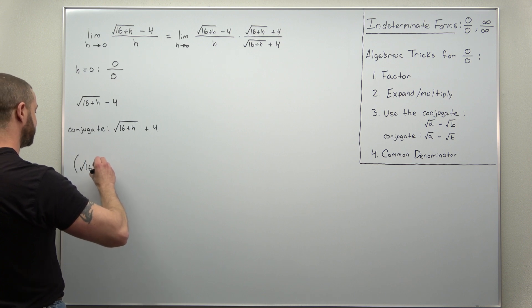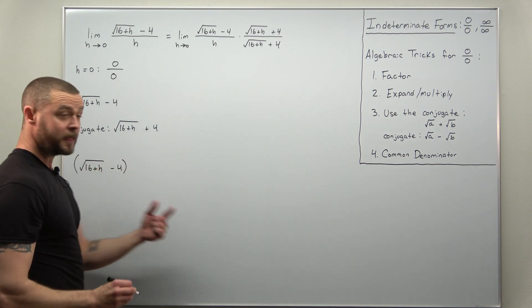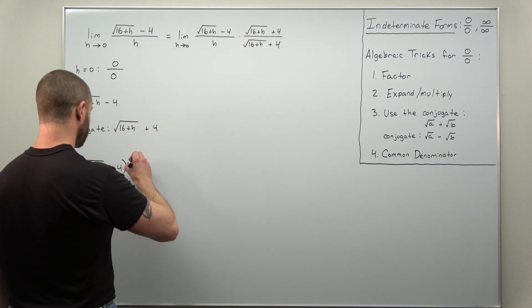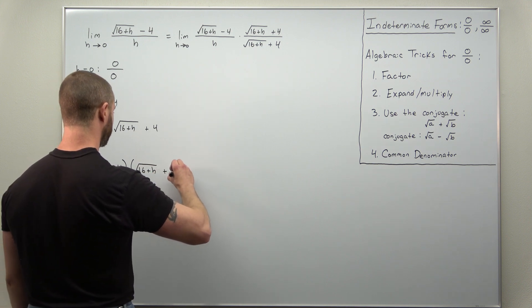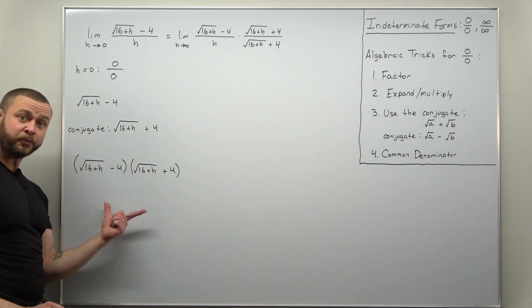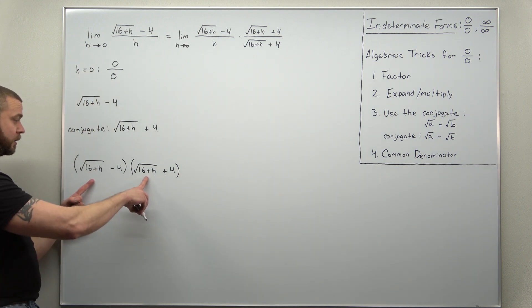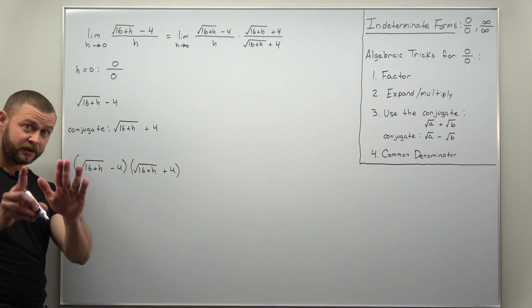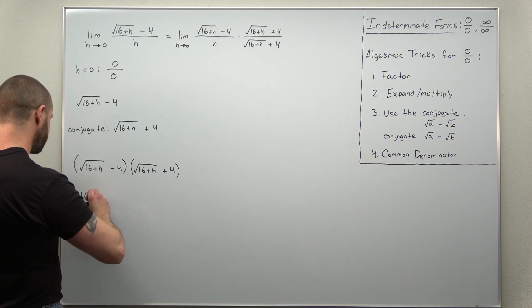Square root of 16 plus h minus 4, and that numerator is going to be multiplying the conjugate, the square root of 16 plus h, but now plus 4. And this we can multiply, foil or expand as normal. Multiply your first terms. We have a square root times itself. That should cancel, leaving you with the inside, 16 plus h.